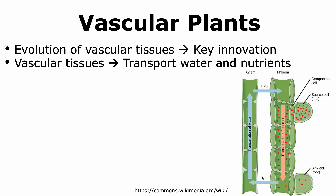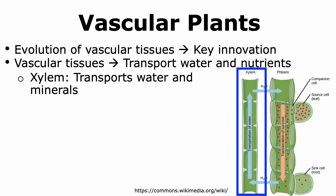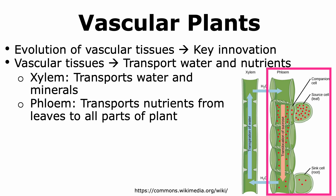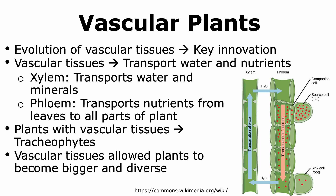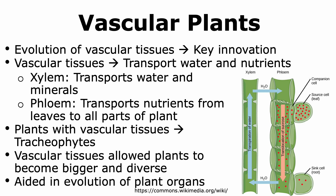The vascular tissues had the ability to transport water and nutrients to different parts of the plant. There are two main types of vascular tissues. Xylem transports water and minerals, while phloem transports nutrients from the leaves to different parts of the plant. Plants that have vascular tissues are called tracheophytes. The evolution of vascular tissues is a key innovation because it allowed the plants to become bigger and more diverse. Thus, it supported the adaptive radiation of plants. It also aided in the evolution of plant organs, which are stems, roots, and leaves.